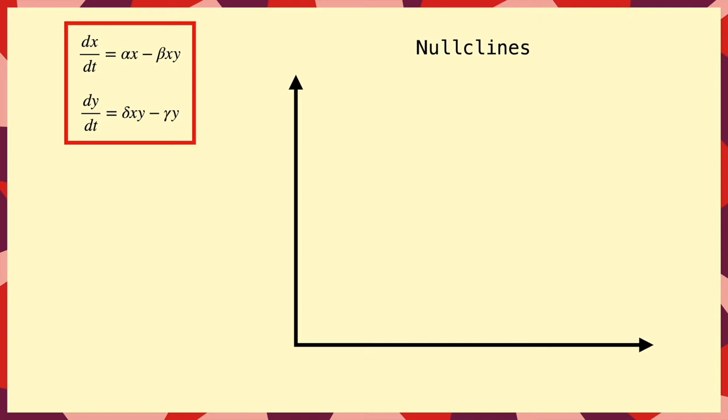So, to analyse this system, we're going to need to construct a phase plane, which is just another way of saying a graph of x and y, which lets us see the paths that the equations predict.